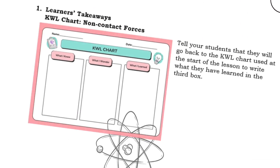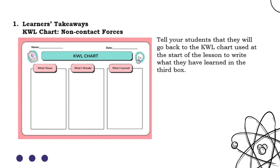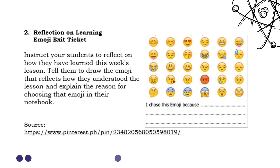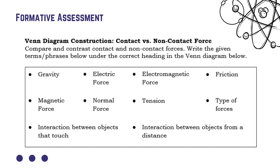For Day 4, let's return to your KWL chart. This time, fill in the 'What I Learned' column. At the start of the lesson you wrote what you knew and what you wanted to know — now write what you have learned. For your reflection and formative assessment, complete the emoji exit ticket and then construct a Venn diagram comparing contact forces versus non-contact forces.